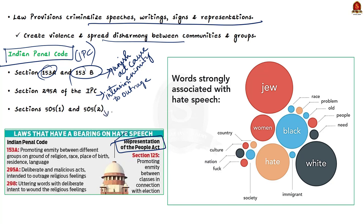Sections 505(1) and 505(2) make the publication and circulation of content which may cause ill will or hatred between different groups an offense. That covers the IPC provisions. Under the Representation of People's Act, Sections 123, clause 3A, and 125 are relevant.